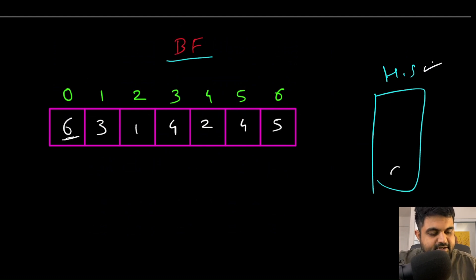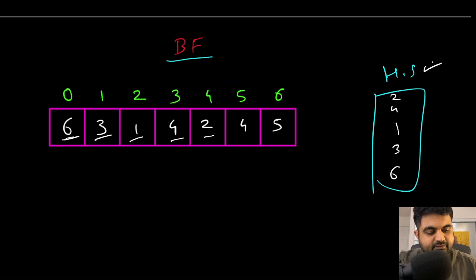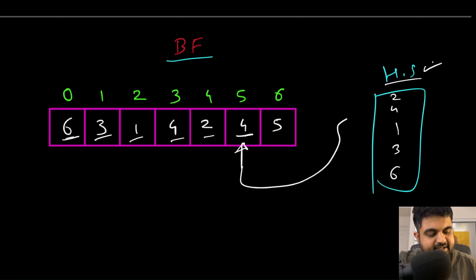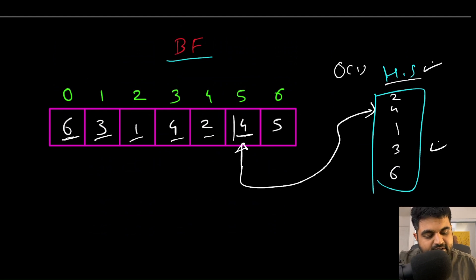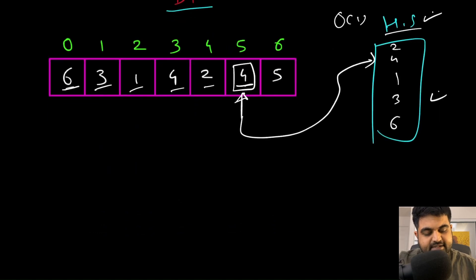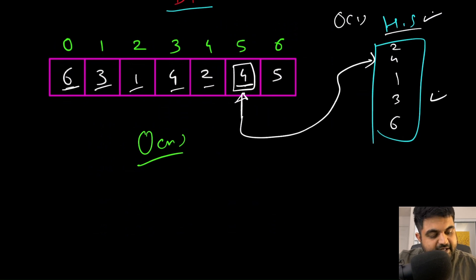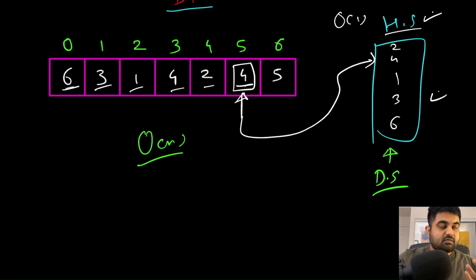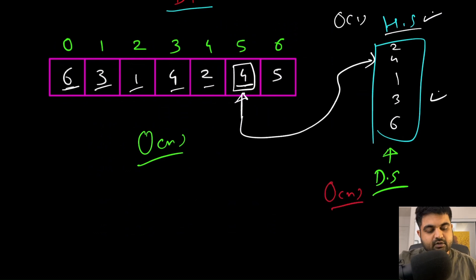We find six, three, one, four, two — none are present, so we add them. Next we find four again, and since four is already present in the hash set we can check that in O(1) time, so four is the repeated element. This solution works in O(n) time, but the space complexity is O(n) because we use an additional data structure — so this is not allowed.